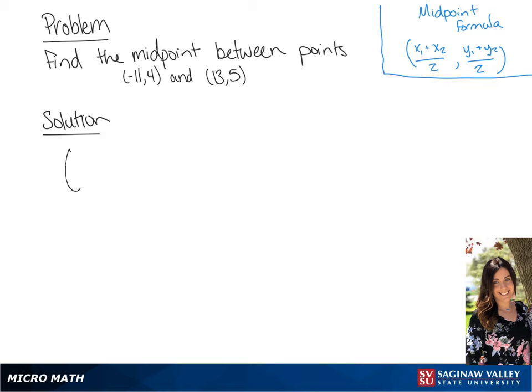We want to find the midpoint between points negative 11, 4 and 13, 5, so we're going to plug in our points into the midpoint formula that's in the top right hand corner.